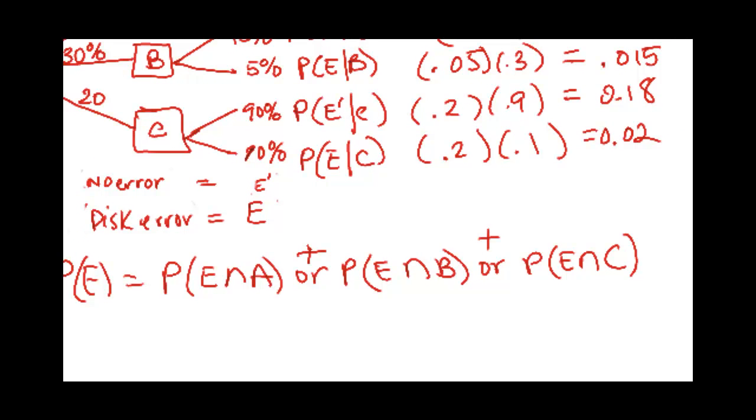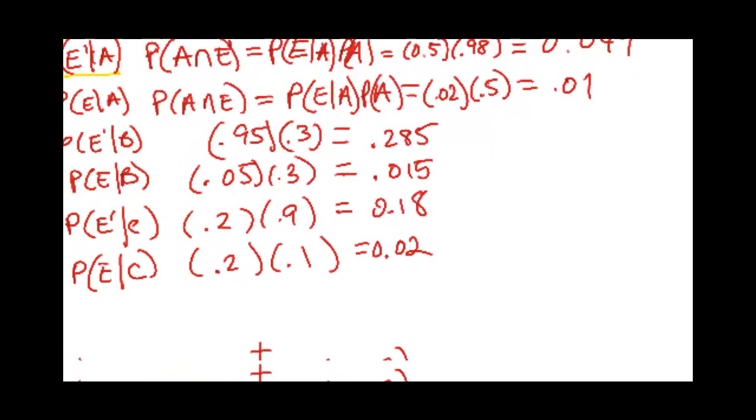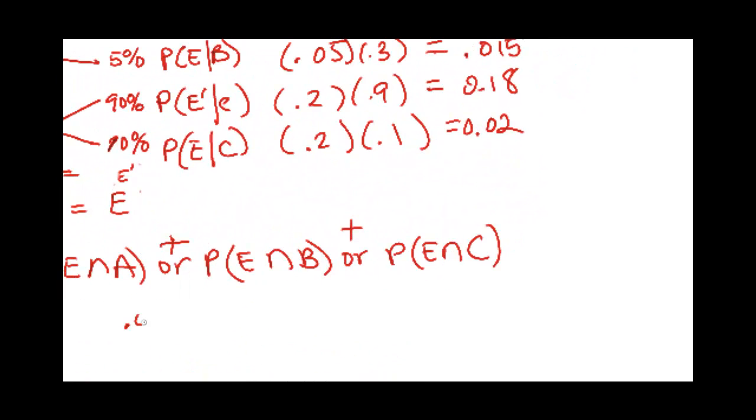And we just found all those intersections. So error in A was 0.01 plus error in B was 0.015 and error in C is 0.02. And when you add all those, you get 0.045. That would be the probability of error.